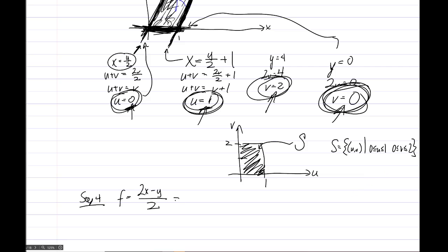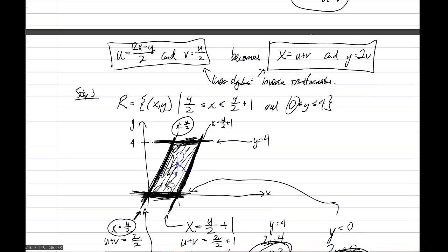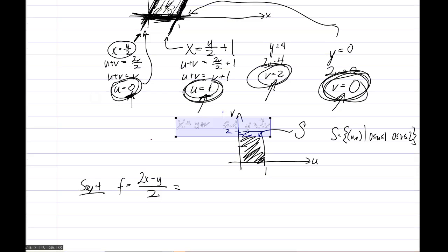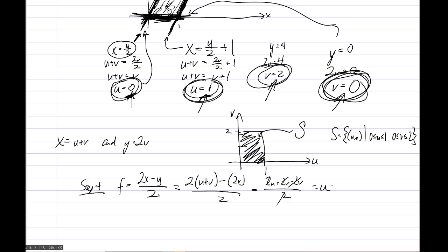All right. So we need to rewrite f by replacing x and y, and we're going to use this thingy here again. Let me just copy-paste this thingy down here somewhere, okay, just as a helpful reminder. So we'll have 2 times x gets replaced with U plus V, minus y gets replaced with 2V, it's all over 2. So we have, after distributing, 2U plus 2V minus 2V over 2, cancel, cancel, cancel this way, we just get U.